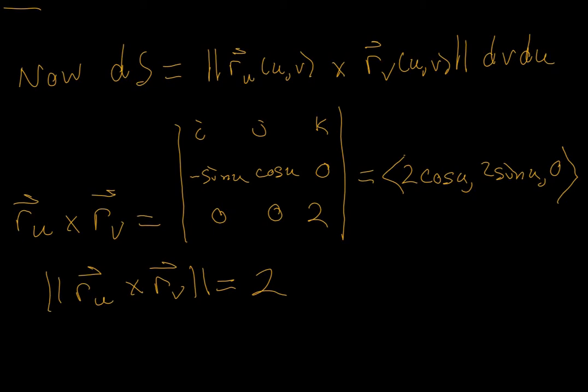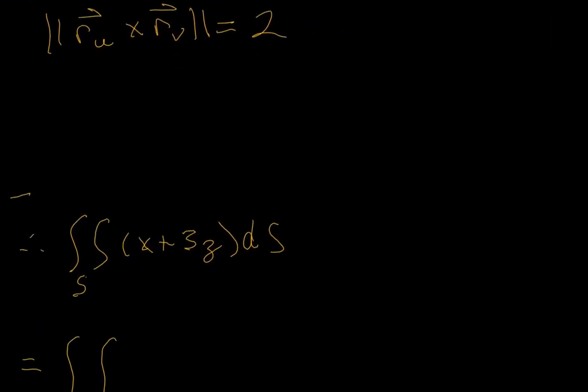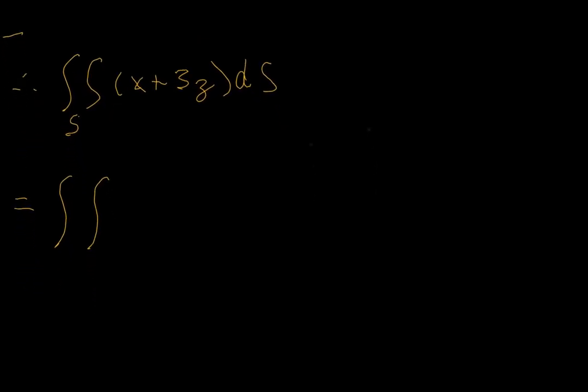So I think we're ready. The goal is to evaluate that surface integral. The author of the problem gives us the u and the v boundaries. I'll write in at the end. The x component of the surface is cosine of u, plus 3 times the z component of the surface, which is 2v.